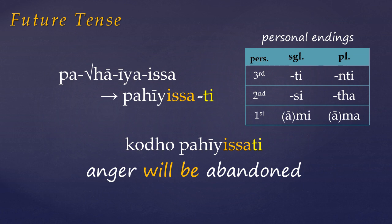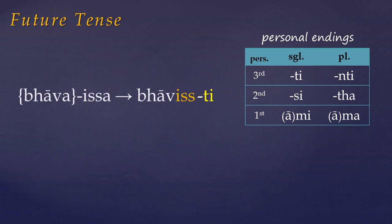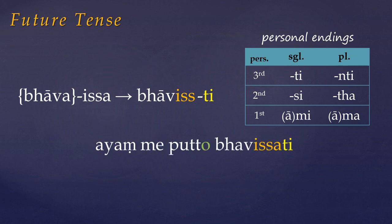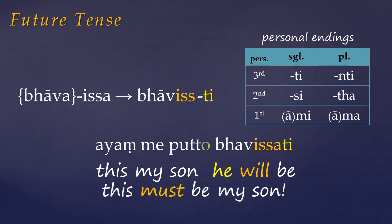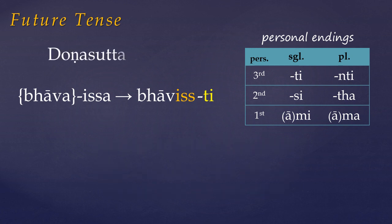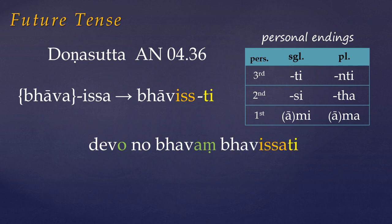But in Pali there are also some specialised meanings of the future tense which aren't shared by English. It occasionally strays into marvelling — as in 'what may be.' For instance, although this literally translates as 'this my son, he will be,' the future here implies wonderment, as in 'this must be my son.' This use of the future to imply shock or wonderment is actually common in Sanskrit too. In Pali, perhaps the best example of this use is in the Dona Sutra, where it's used to express surprise in the sense of 'how can this be?'